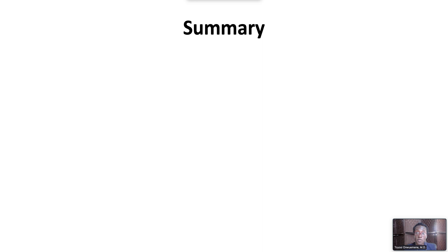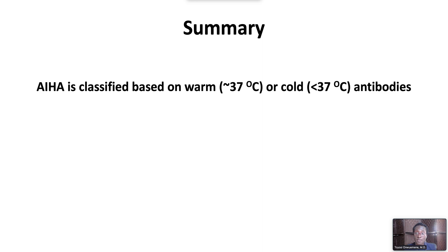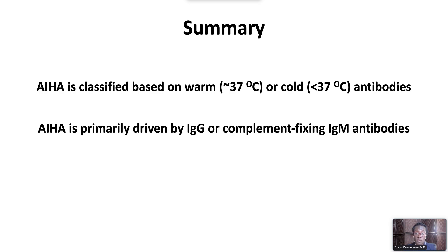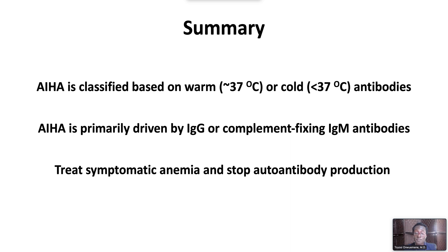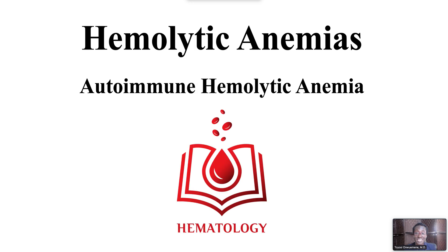In summary, autoimmune hemolytic anemia is classified based on the presence of warm or cold antibodies. It is primarily driven by IgG or complement-fixing IgM antibodies. The mainstay of management is to treat symptomatic anemia and stop autoantibody production using immunosuppression. This ends our video on hemolytic anemias: autoimmune hemolytic anemia.